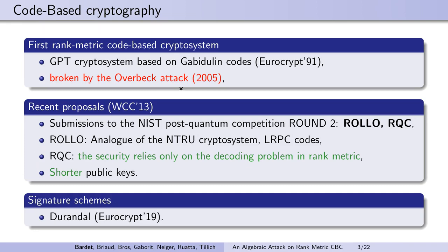Recently, proposals have been made that have led to two different schemes that are currently in the second round of the NIST competition for post-quantum cryptography, namely the ROLLO and the RQC cryptosystems.